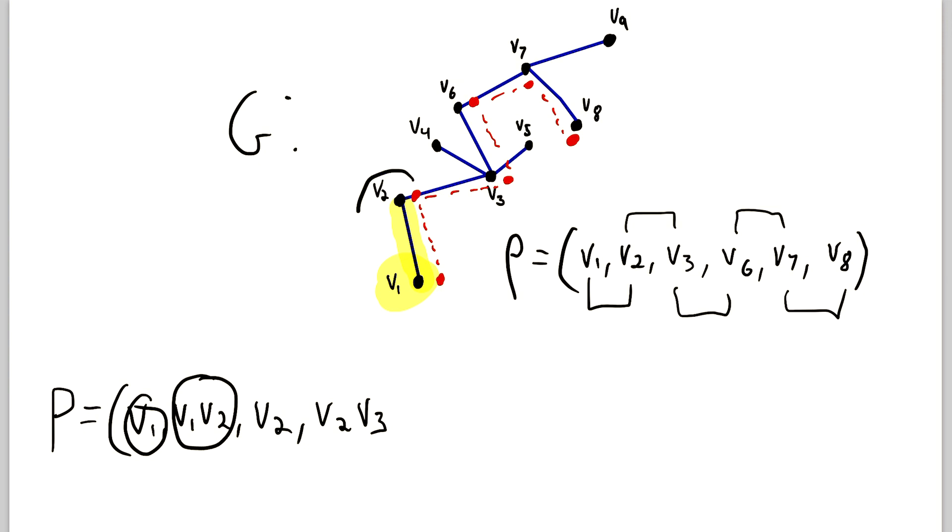Then from that point, we were at V2. So we put V2. Then we traveled the edge V2, V3. So we put V2, V3. Then we're at V3. So what comes next in the sequence is the vertex V3. Then we traversed the edge V3, V6. Then we were at V6. Then we traversed the edge V6, V7.